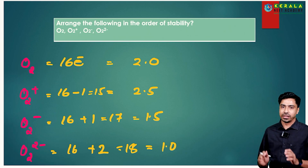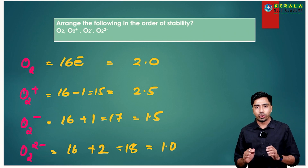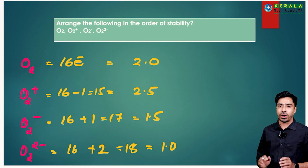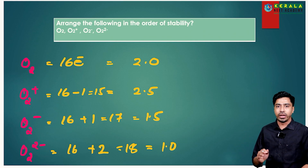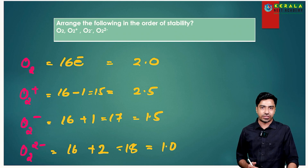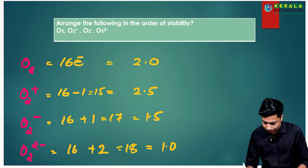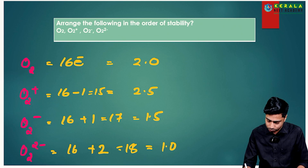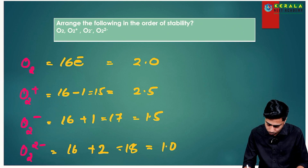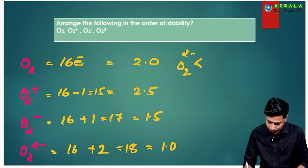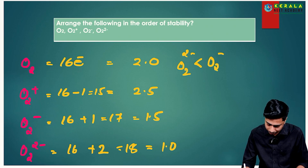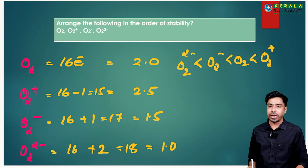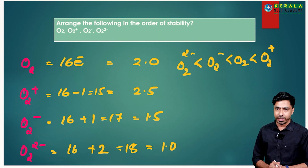The bond orders are: O2 = 2, O2⁺ = 2.5, O2⁻ = 1.5, O2²⁻ = 1. Arranging in increasing order of stability: O2²⁻ < O2⁻ < O2 < O2⁺. Higher bond order means higher stability.